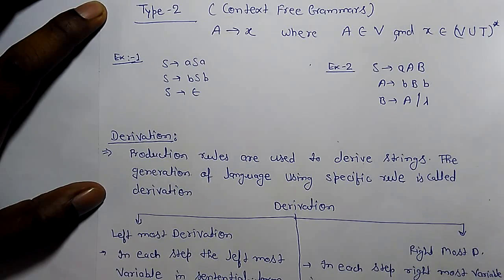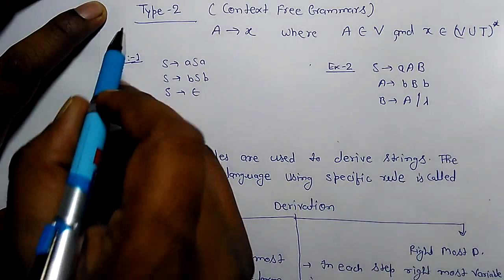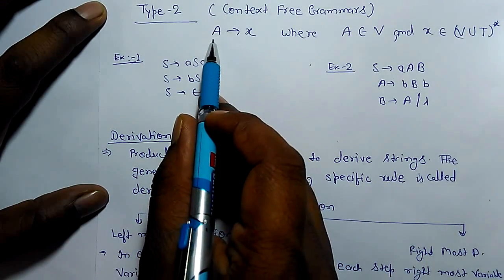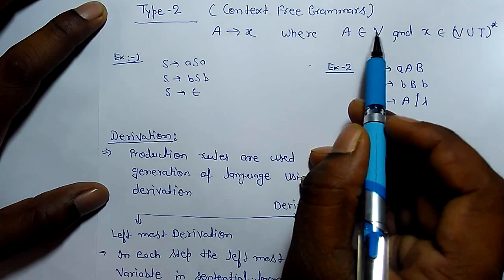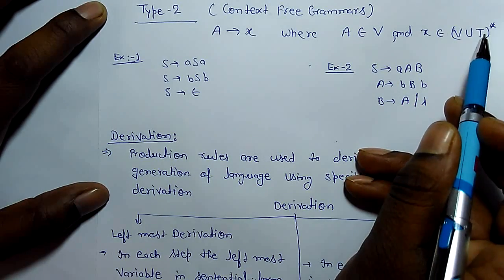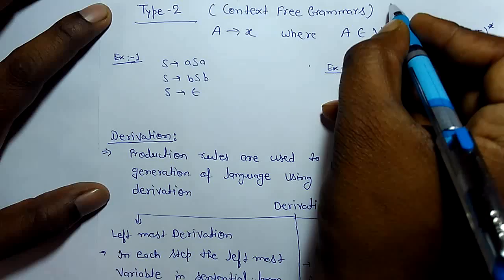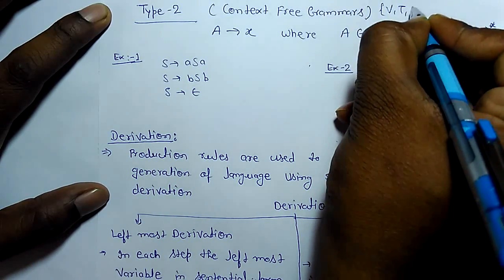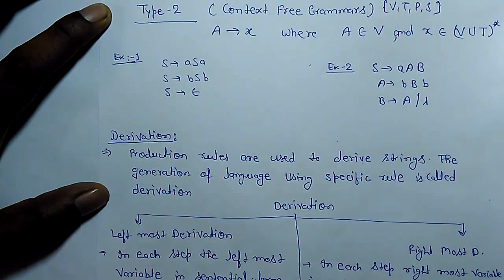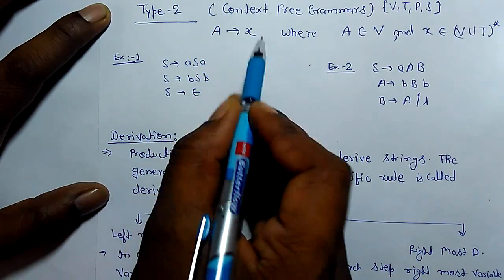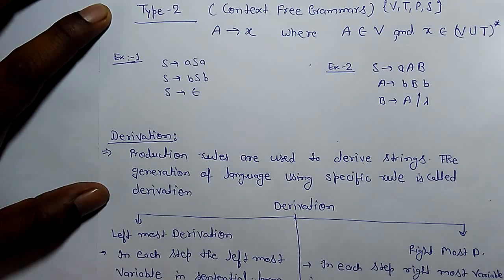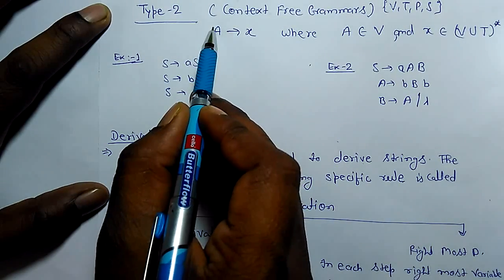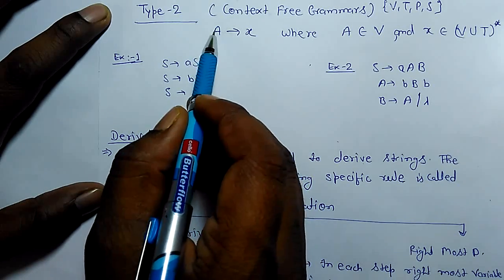Today we are going to learn context-free grammar. This is Type 2 grammar. The definition of context-free grammar is that the production rule should be in the form A derives X, where A must belong to variables and X belongs to V union T closure. As we know, a grammar has four tuples: V, T, P, and S — variables, terminals, production rules, and start symbol. A grammar in this form is known as context-free grammar.